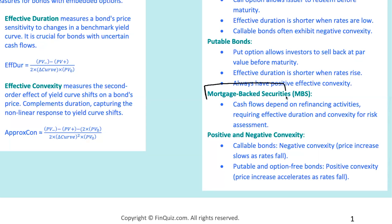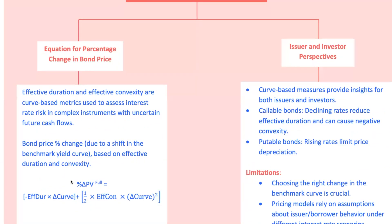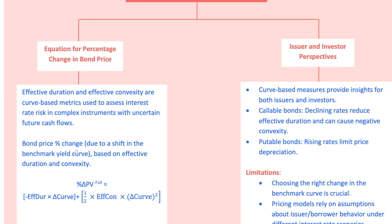Mortgage-backed securities (MBS) cash flows depend on refinancing activities, making effective duration and convexity particularly relevant. As rates drop, refinancing increases, causing early repayment and affecting cash flows. Convexity can swing between positive and negative based on prepayment speeds. This is the formula for estimating the percentage change in a bond's full price for a shift in the benchmark yield curve using effective duration and convexity. Using curve-based duration and convexity helps both issuers and investors understand the potential risk and returns of complex bonds like callable and putable bonds or MBS, providing more nuanced insights especially in volatile or uncertain interest rate environments.